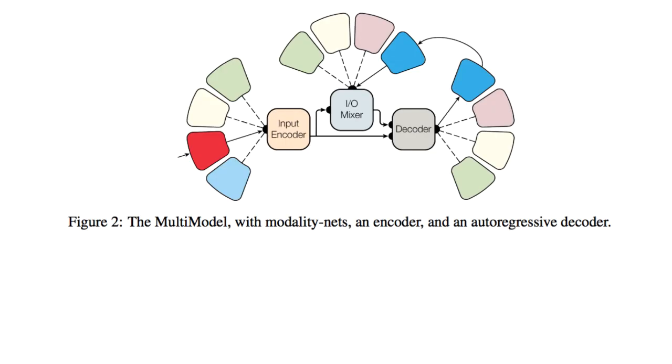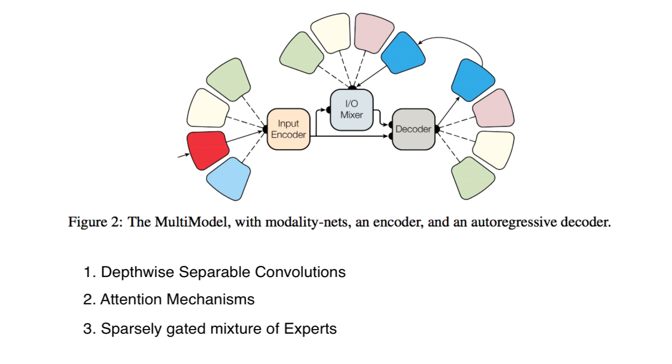Now we have the encoder, the mixer, and the decoder. These are made up of basically three major fundamental components: depth-wise separable convolution units, attention mechanisms, and sparsely gated mixture of experts. Each of these topics warrant their own video, but I'll keep it brief for this simple explanation.